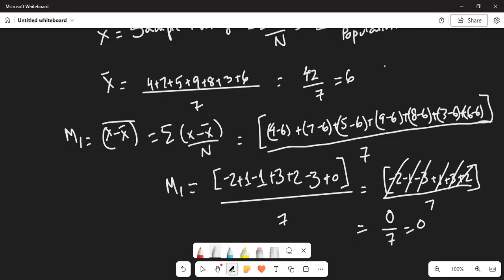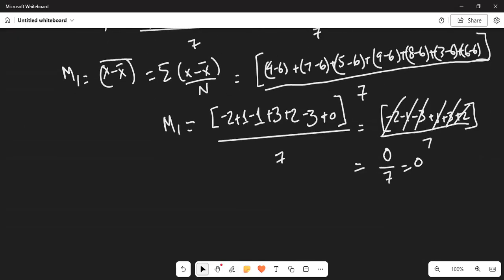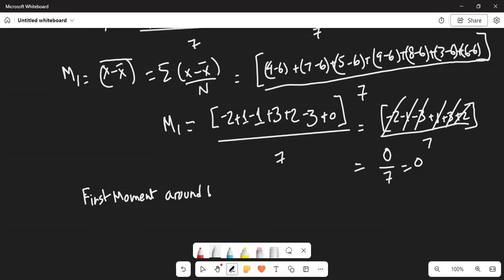So what is the bottom line? The bottom line is the first moment around the mean, M1, is equal to 0. This is the important thing.